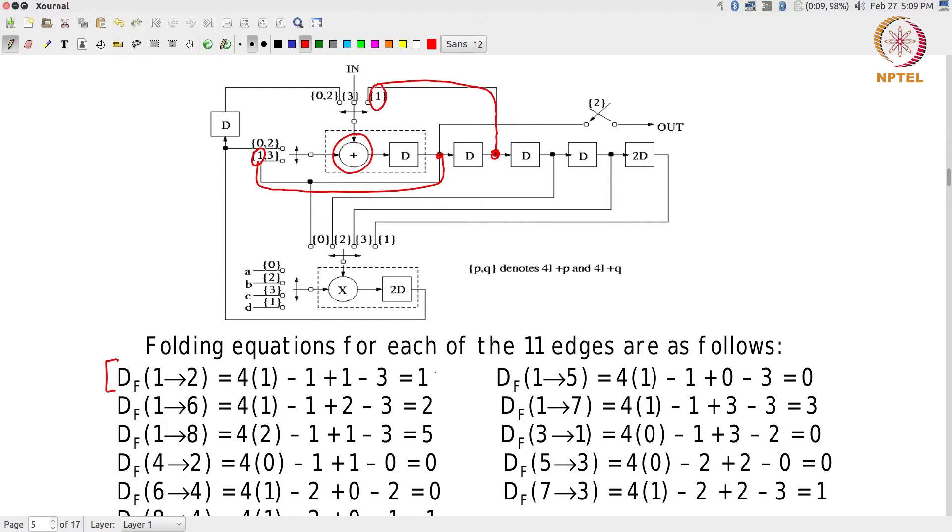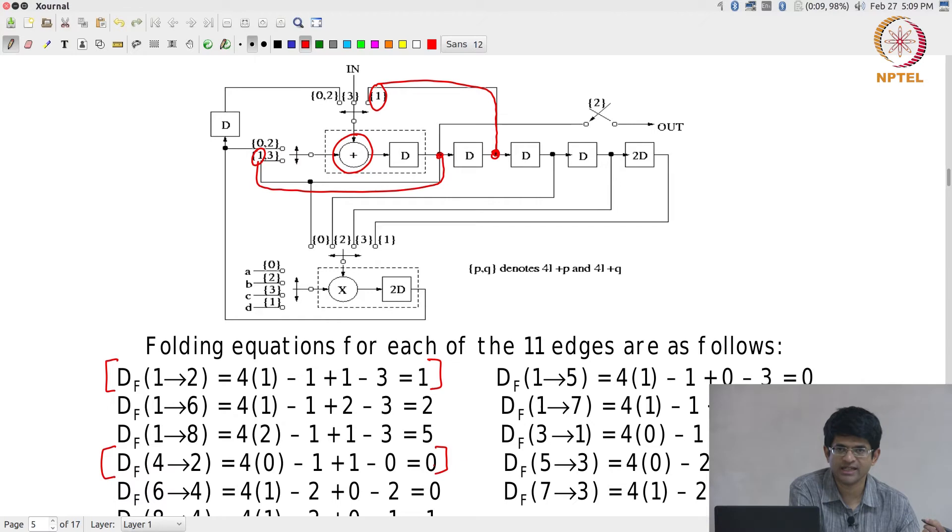DF from 1 to 2 had a DF value of 1 and from 4 to 2 had a value of 0. When I say that the DF from 4 to 2 has a value of 0, essentially what I am saying is the input to 2 which is coming from 4 is to be taken from the output of my adder module with 0 additional registers after it. That is what this corresponds to, this line out here.